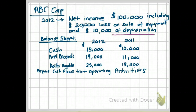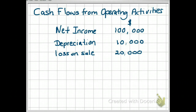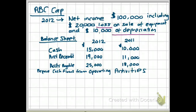Next, we look for gains and losses. Here we have a loss of $20,000, so we would add it back to our cash flows from operating activities. Remember, the loss was subtracted to arrive at net income of $100,000, so we add it back here. That takes care of your income statement.